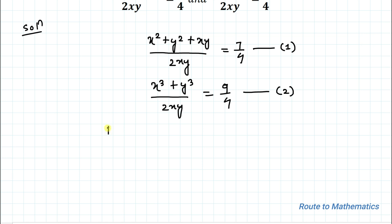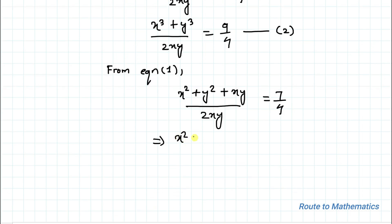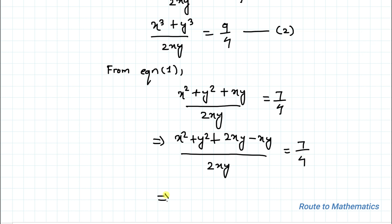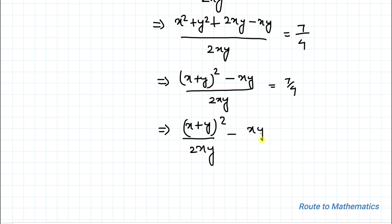First we will consider Equation 1: (x² + y² + xy) / (2xy) = 7/4. In the next step, we can write x² + y² + xy as (x + y)² - xy. Rewriting, we get [(x + y)² - xy] / (2xy) = 7/4, which expands to (x + y)² / (2xy) - xy / (2xy) = 7/4.